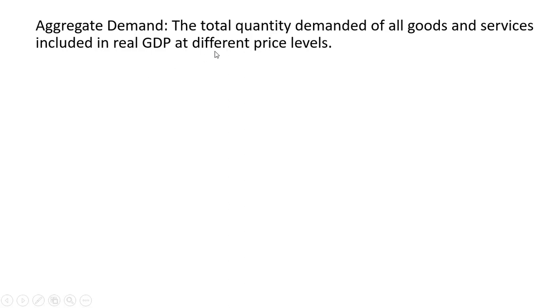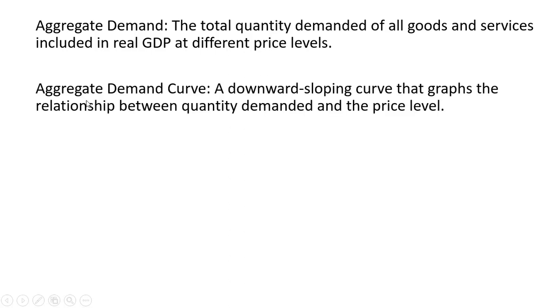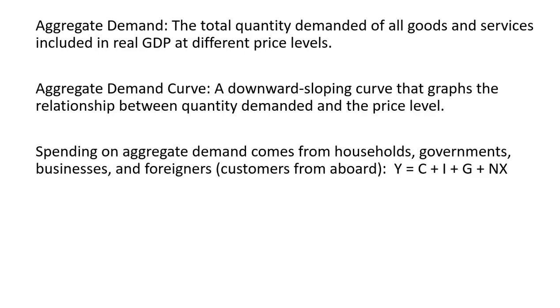In this video, we're going to look at aggregate demand. Aggregate demand is the total quantity demanded of all goods and services included in real GDP at different price levels. We can think of the aggregate demand curve as a downward-sloping demand curve that graphs the relationship between the quantity demanded and the price level.